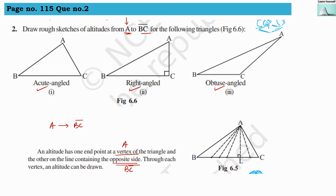An altitude will always be a straight line, so it will make a right angle at the opposite side. This is an important characteristic of altitude: once it comes out from the vertex, it touches the opposite side and makes a right angle there. For the acute angle triangle, from vertex A it joins the opposite line segment BC making a right angle, and we name this AE.